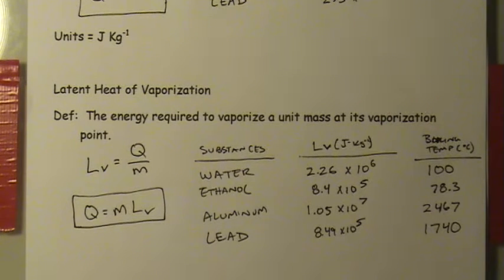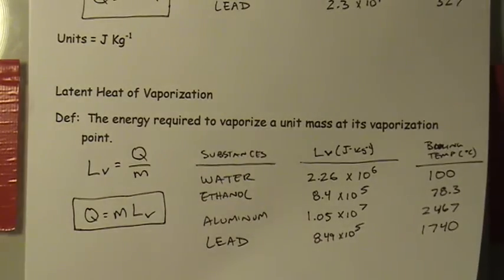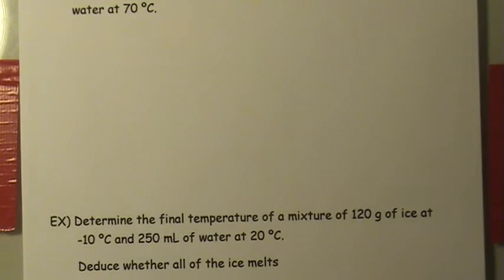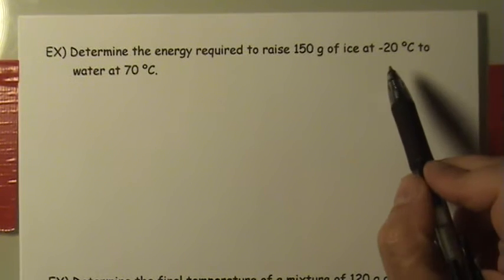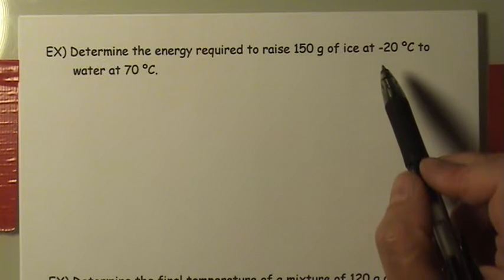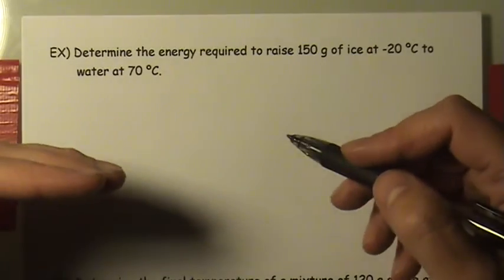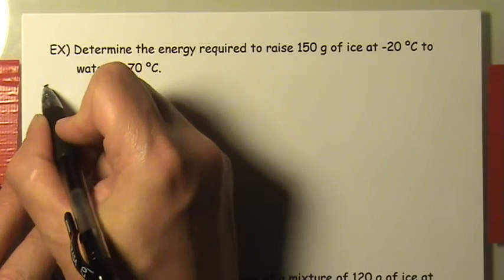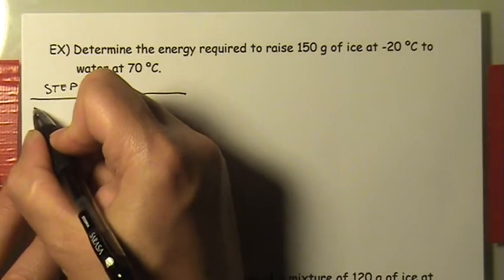The latent heats of fusion and vaporization are simply the energy required to separate molecules and change phase — solid to liquid or liquid to gas. Now let's look at a Level 1 problem. We'll take ice at negative 20°C, raise its temperature until it melts, and then continue adding energy to raise the water temperature up to 70°C. Rather than jumping straight to calculations, I'll state each step clearly and put the calculation to the right.